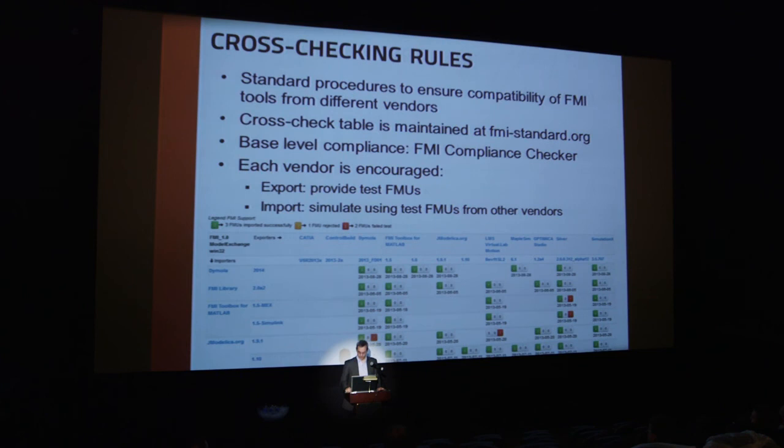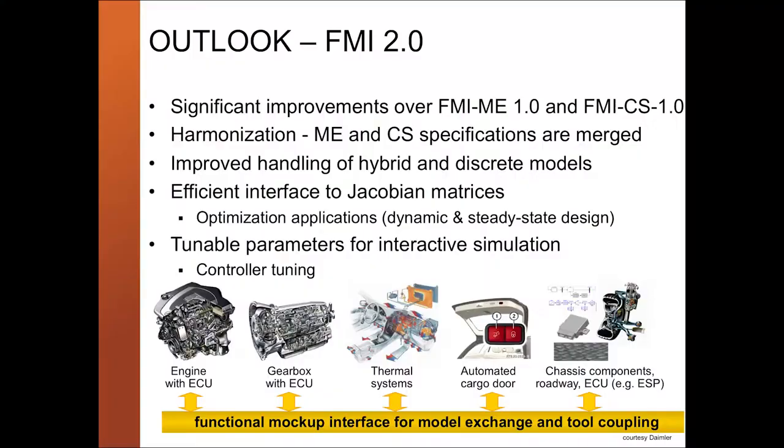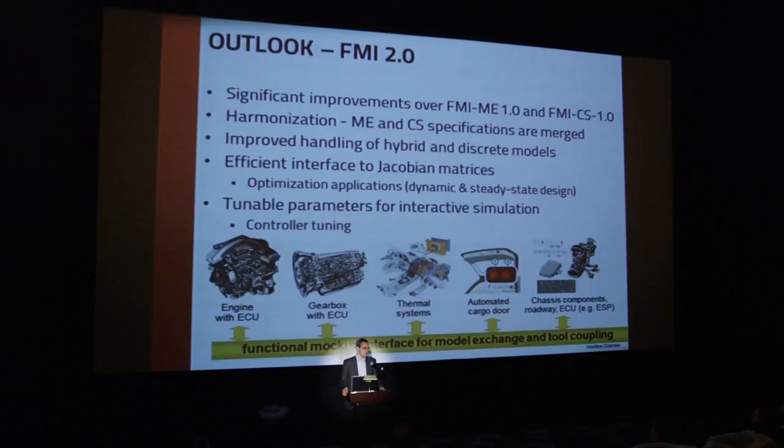Short outlook to FMI 2: there are significant improvements over FMI Model Exchange 1 and FMI Co-Simulation 1. In particular, there's more harmonization — the specifications are merged into a single specification in 2.0. There's improved handling of hybrid and discrete models, an efficient interface to Jacobian matrices that allows optimization applications to also be integrated with the FMI standard, and tunable parameters for interactive simulation, which are mostly important for the control development part and allow controller tuning.